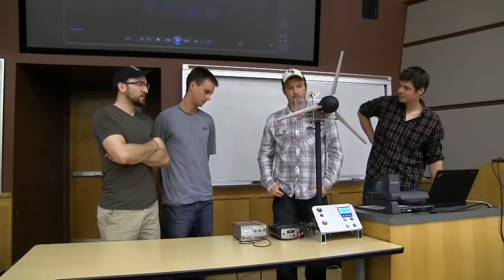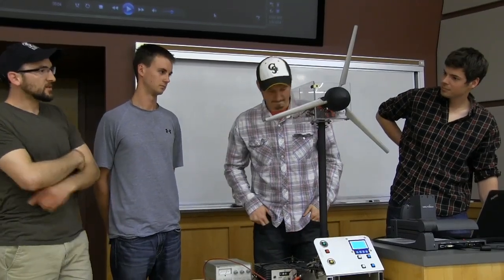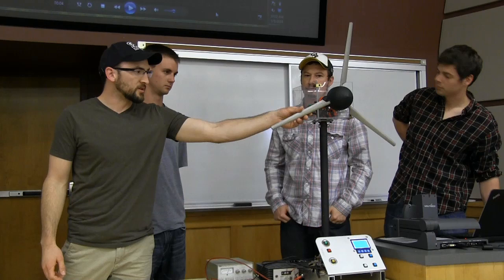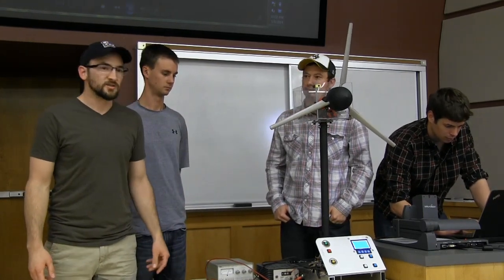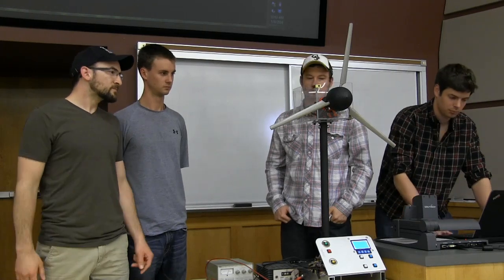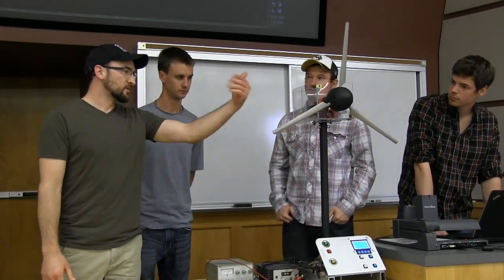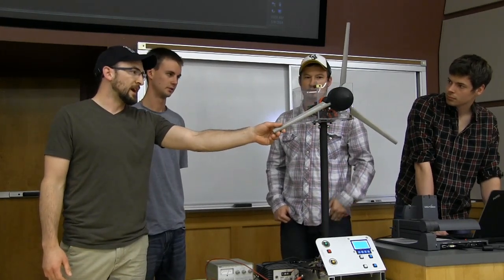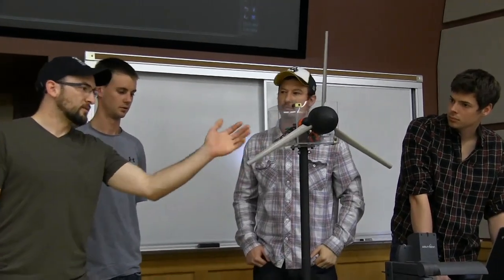Our project is a variable pitch wind turbine with a CVT transmission. The main part of the project is the ability to pitch the blades back and forth to change the angle of attack. When you do that you're essentially generating more power. Right now, if the wind was actually going towards the device, it wouldn't actually be turning, but if we pitch the blades back, we'd actually be able to generate more power because of the higher angle of attack.